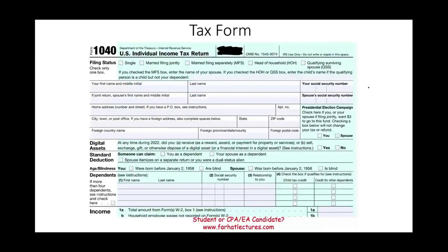Welcome to this session on the filing status of the individual when they file their tax return. Looking at Form 1040, there are five filing statuses: single, married filing jointly, married filing separately, head of household, and qualifying surviving spouse, abbreviated QSS.